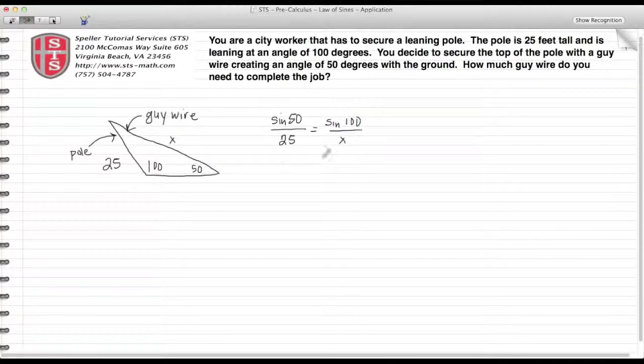...and divide that by the unknown length X. First step is to cross multiply, so I have X sine 50 is equal to 25 times the sine of 100.